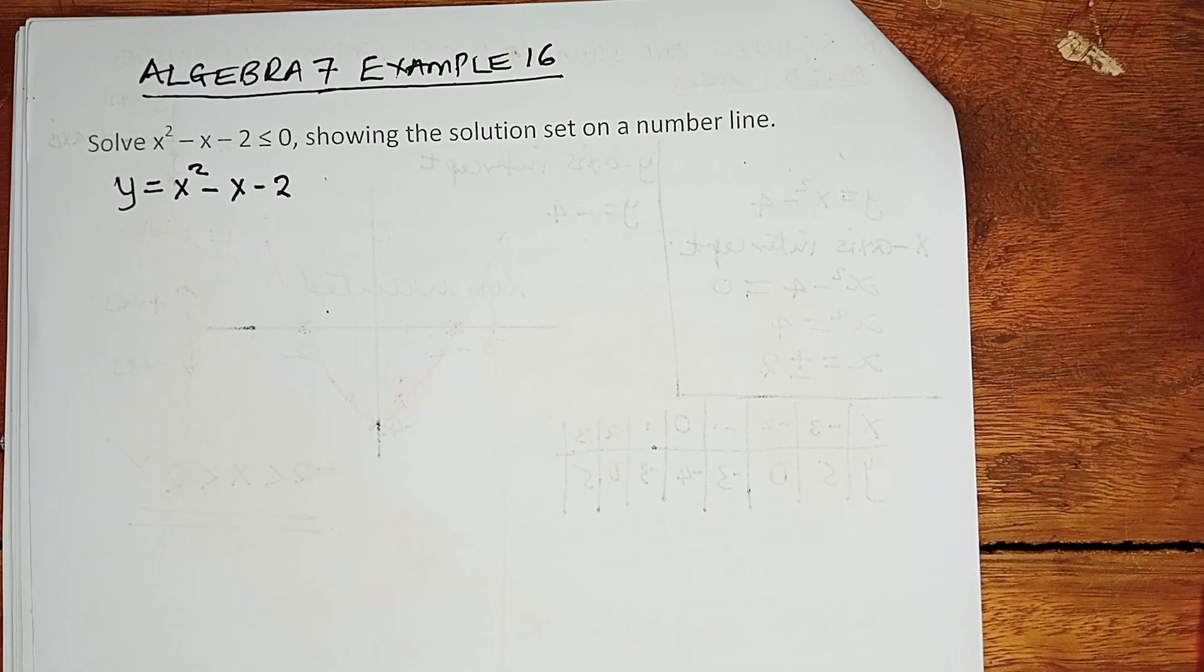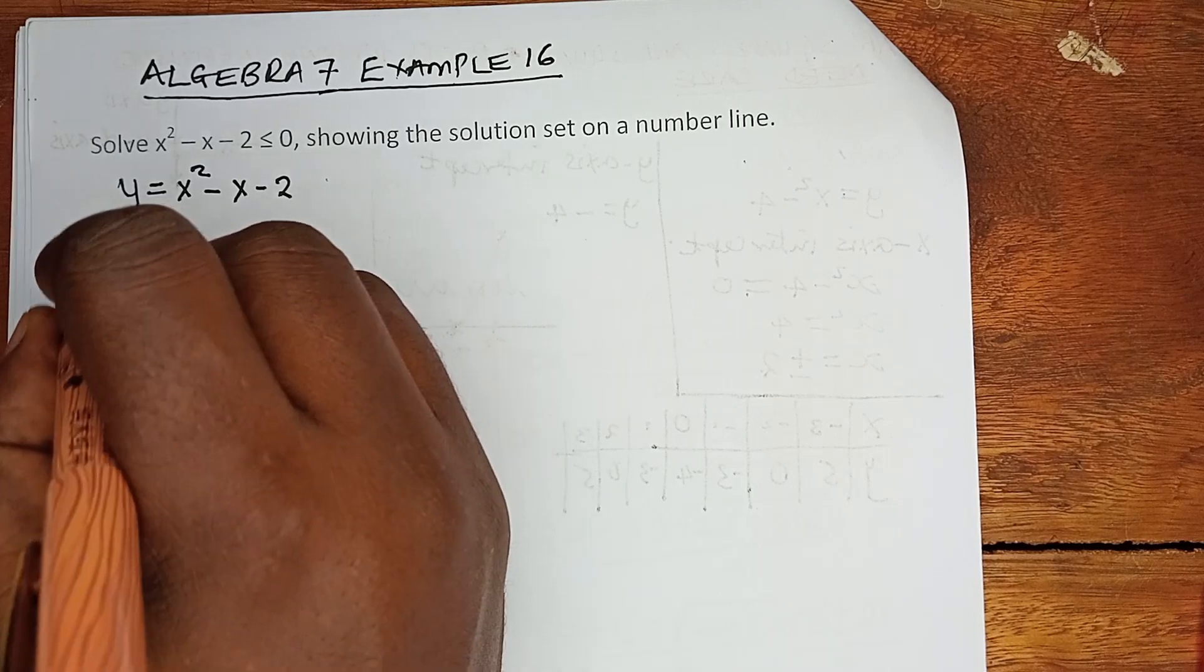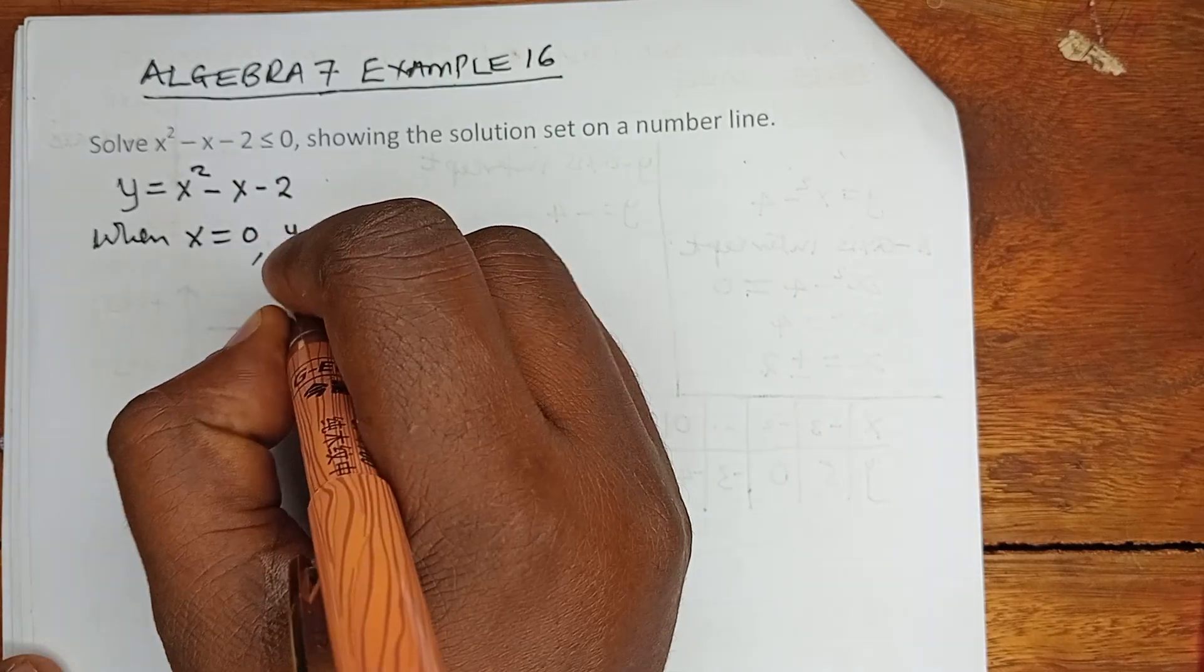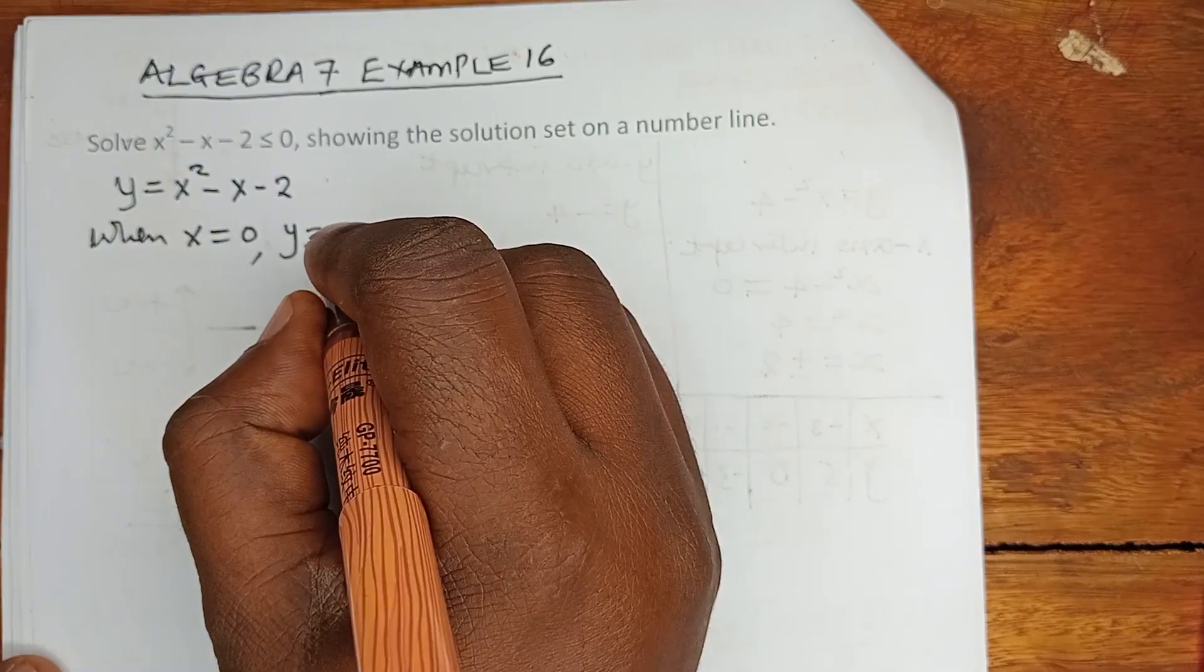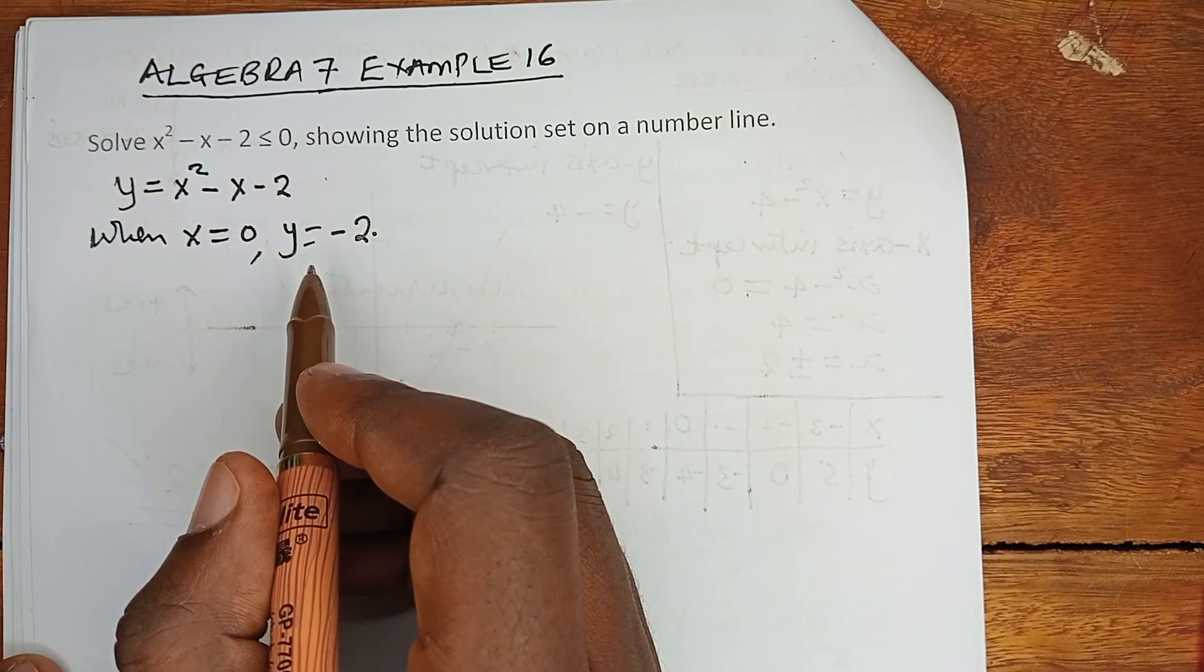Within what we have learned in the previous example, when x is 0, y is 0 minus 0 minus 2. And this is what we called the y-intercept.